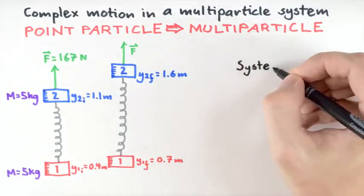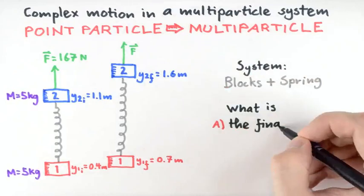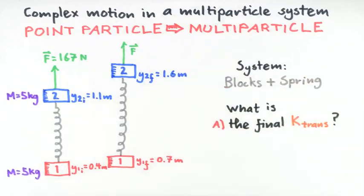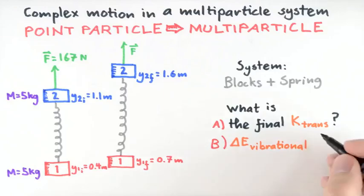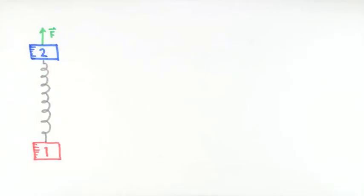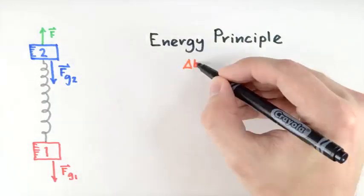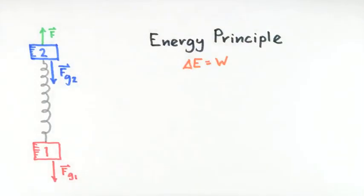Choosing the system as the two blocks and the spring, we need to find the final translational kinetic energy of the system and the change in vibrational energy of the system. Drawing sketches as we go along will help us visualize the situation. We also note that interactions on the system include the weight forces exerted by the Earth on each block. We're asked to find energies in this problem, so we start with the energy principle.